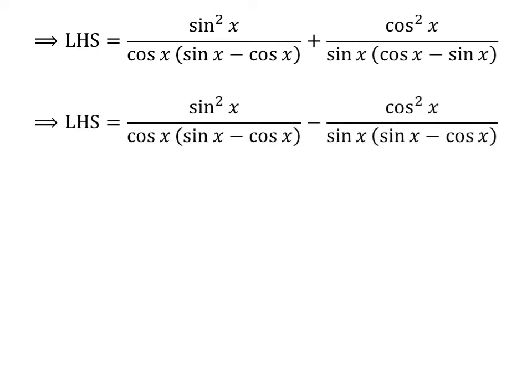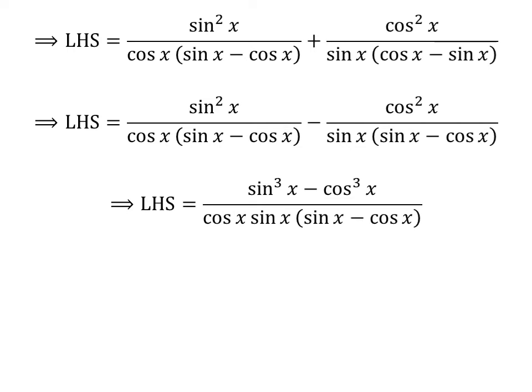In the second fraction, I have taken out minus from the denominator. The least common factor of the denominators of the above fractions is cosine of x times sine of x times sine of x minus cosine of x. After addition, the numerator becomes cube of sin of x minus cube of cosine of x.